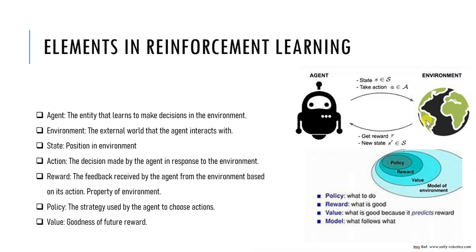Next is state. The state is the current situation of the agent at a particular point in time. It is a representation of the environment, including relevant information about the agent like current location, velocity, and other factors that affect the agent's action. The agent state is used to determine the appropriate action to take next.